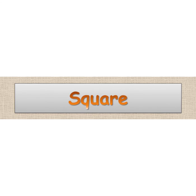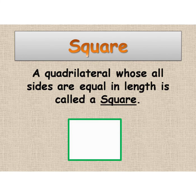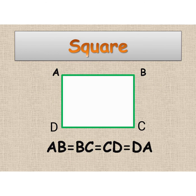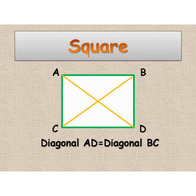Now we will study about another quadrilateral, that is a square. A quadrilateral whose all sides are equal in length is called a square. The given figure is a square. In this, diagonal AC equals diagonal BD.